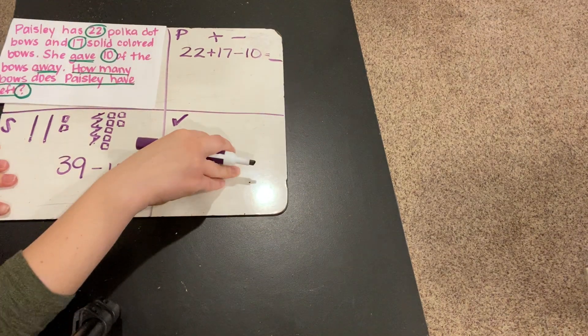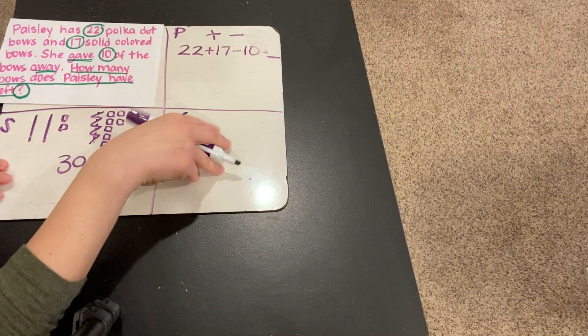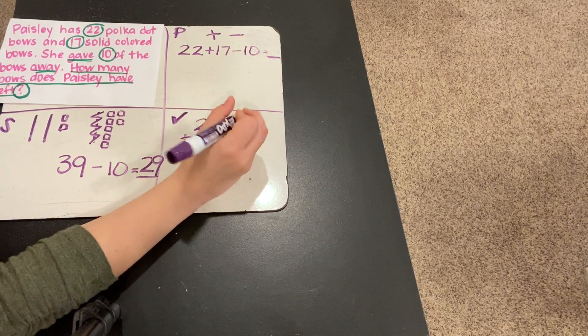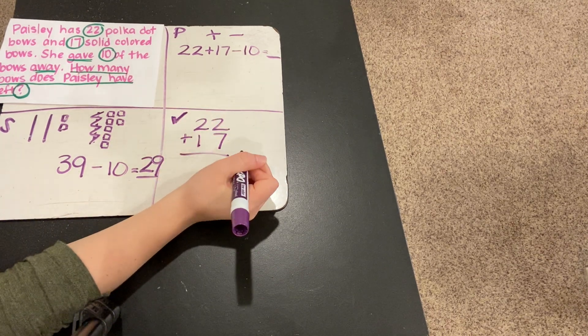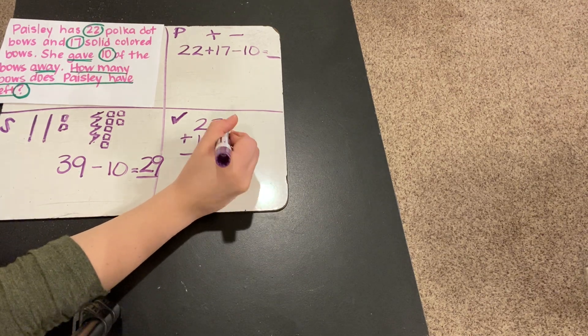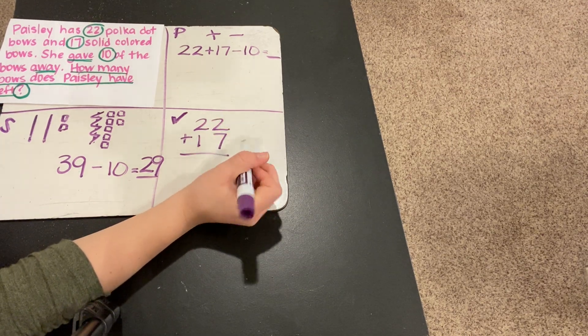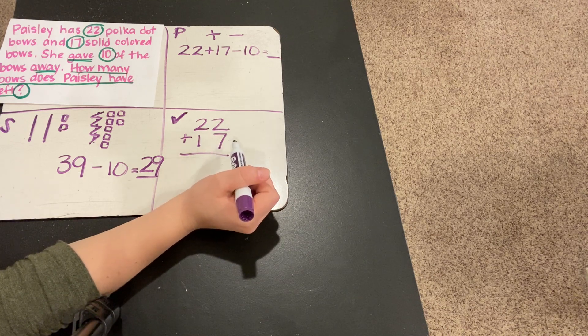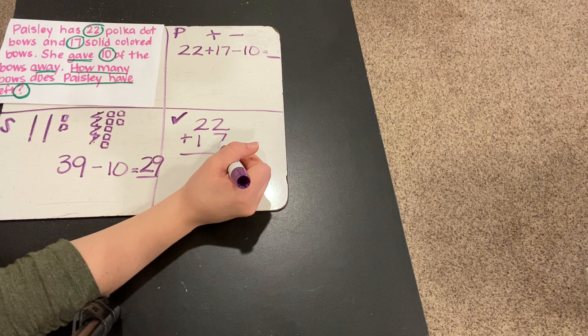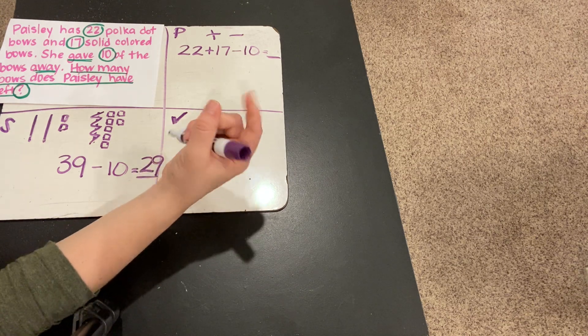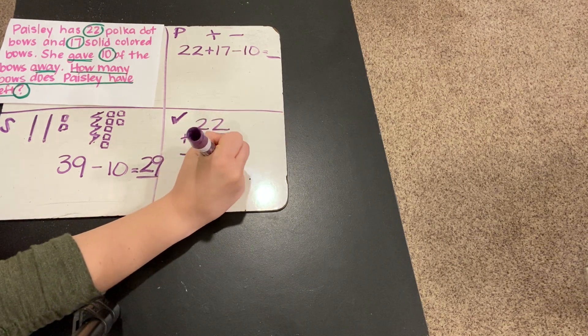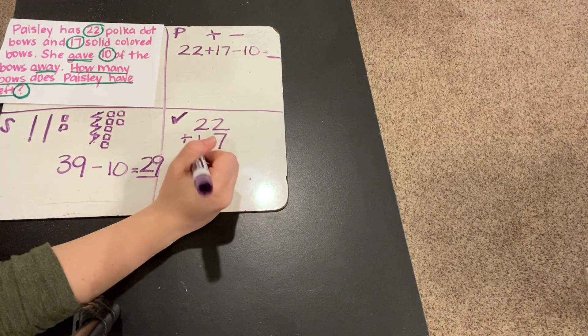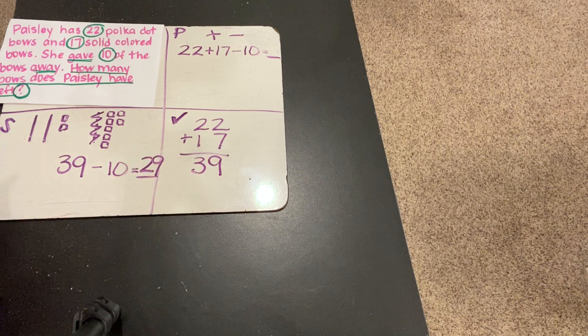Let's check our work over here using a different strategy. This time, I just want to use a number sentence or equation to solve. So, I'm going to do 22 plus 17 first. What is 2 plus 7? Or, let's use the commutative property. What is 7 plus 2? 7 plus 2 is 7, 8, 9. And then, what is 2 plus 1? 3. So, we have 39.